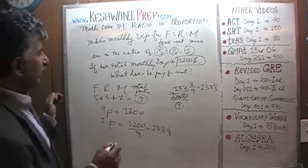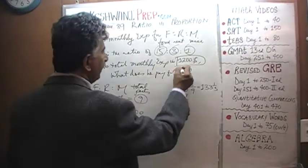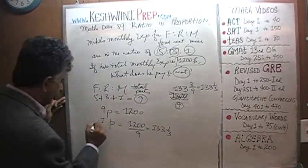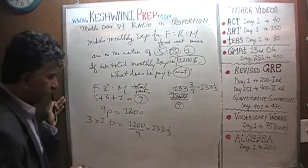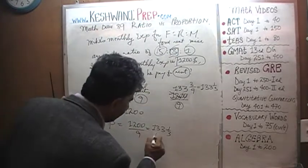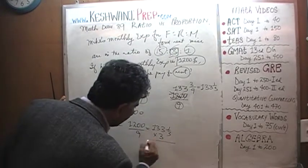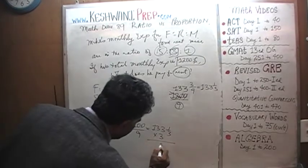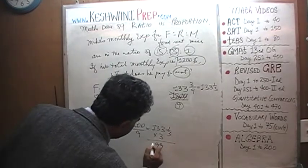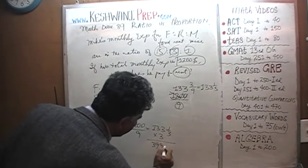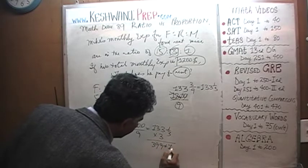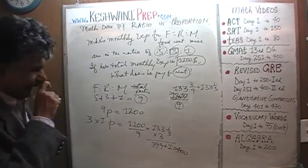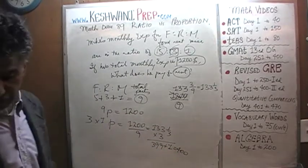Rent is three parts, so we take three times that amount. One thirty-three times three is three ninety-nine, and three times one-third is another one — so rent is four hundred dollars even.